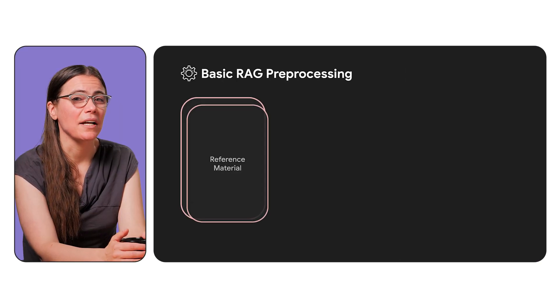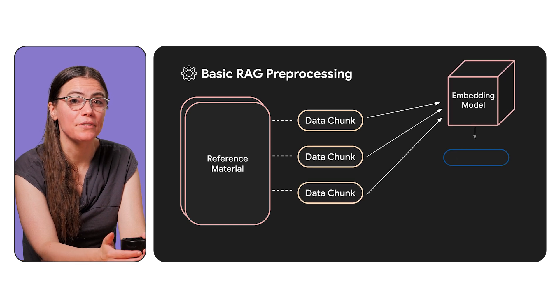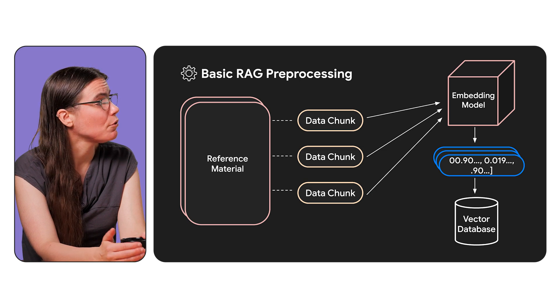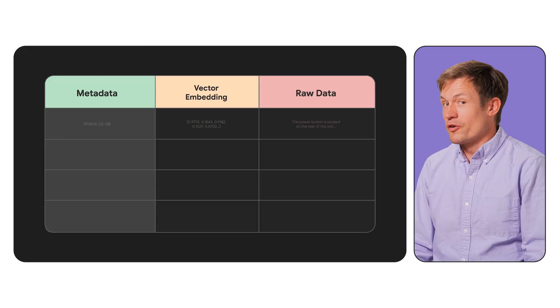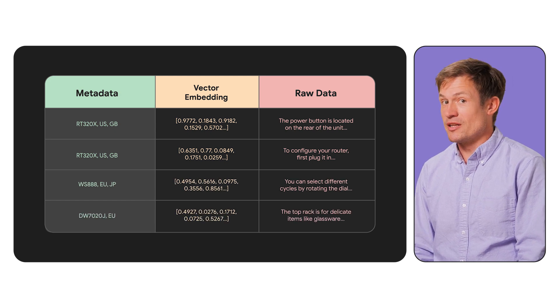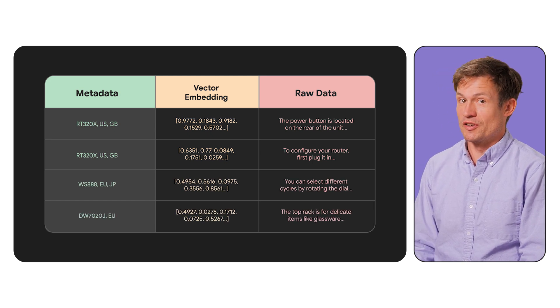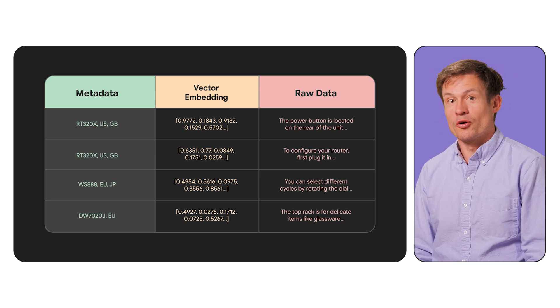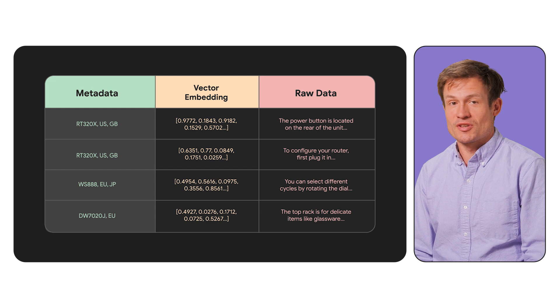In basic RAG, we divided our knowledge base into chunks and stored the chunks in a vector database. So what are some of our options that may improve accuracy? Well, our first option is that we could store some metadata with each chunk like the main topic, the category the chunk fits in, or a specific product that the chunk is relevant to, or whatever makes sense in your specific use case.